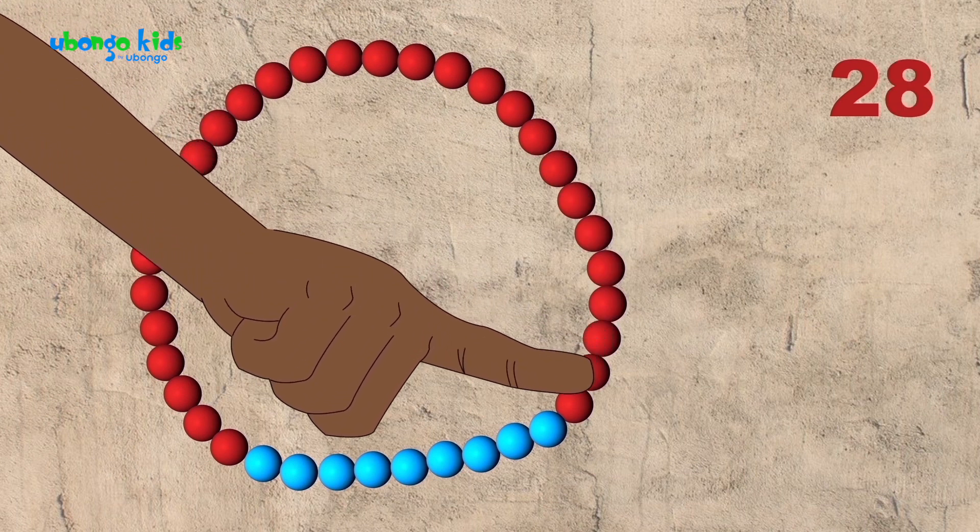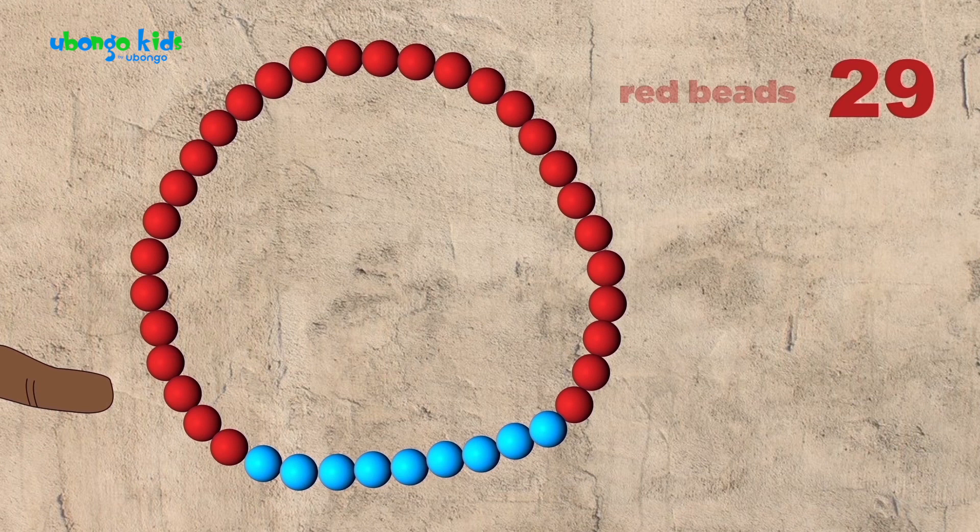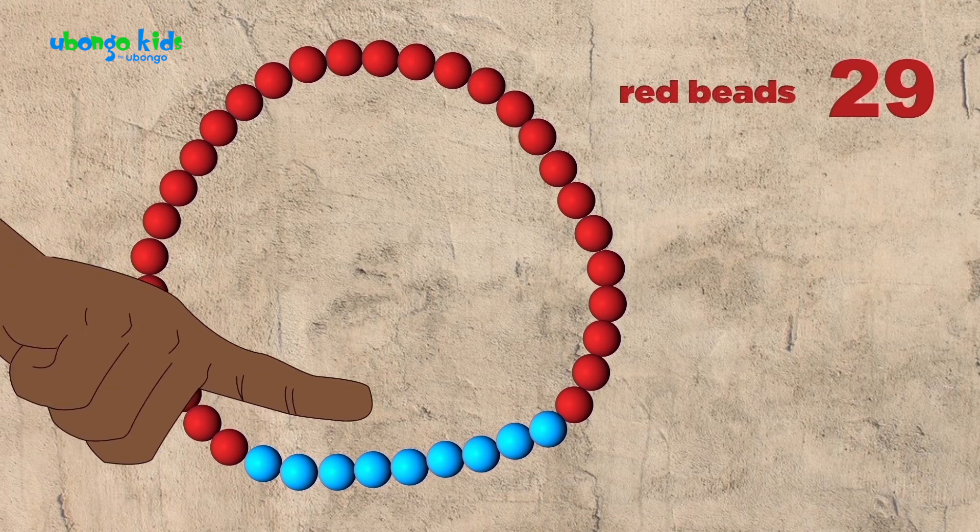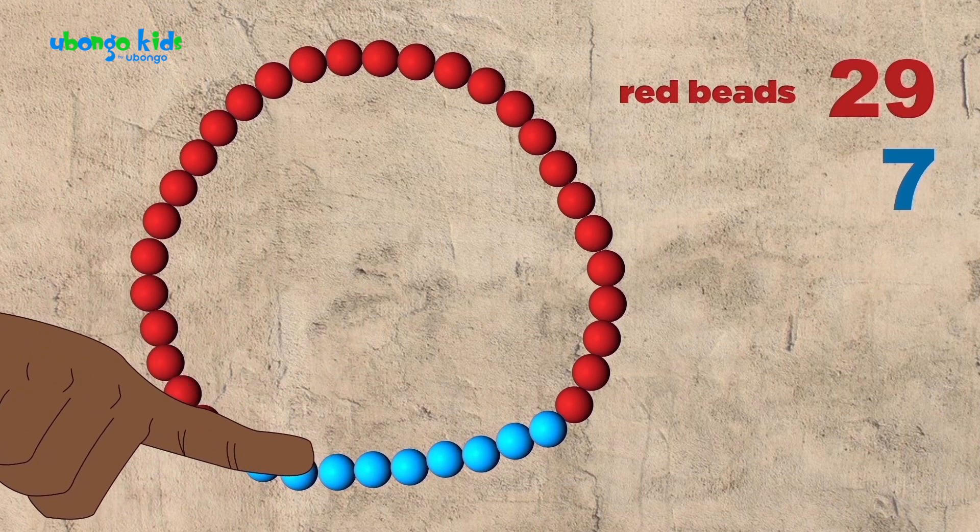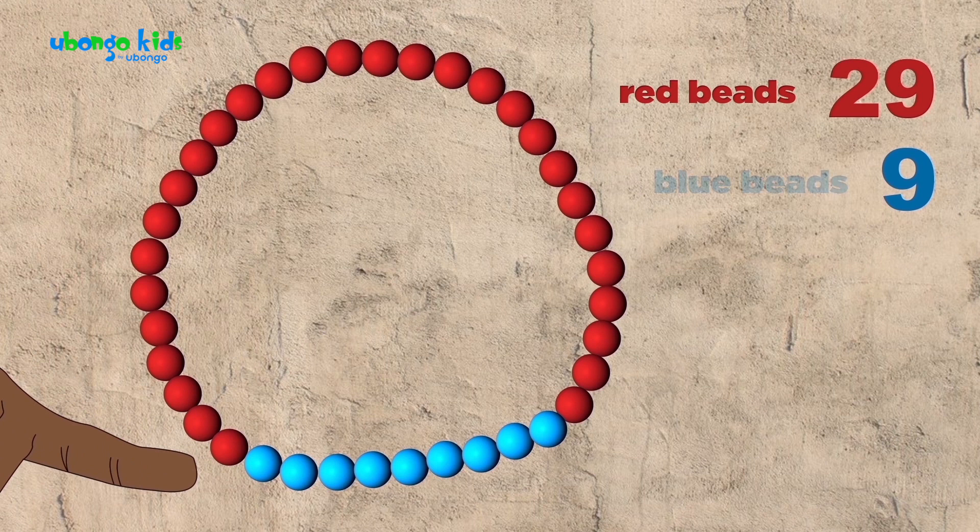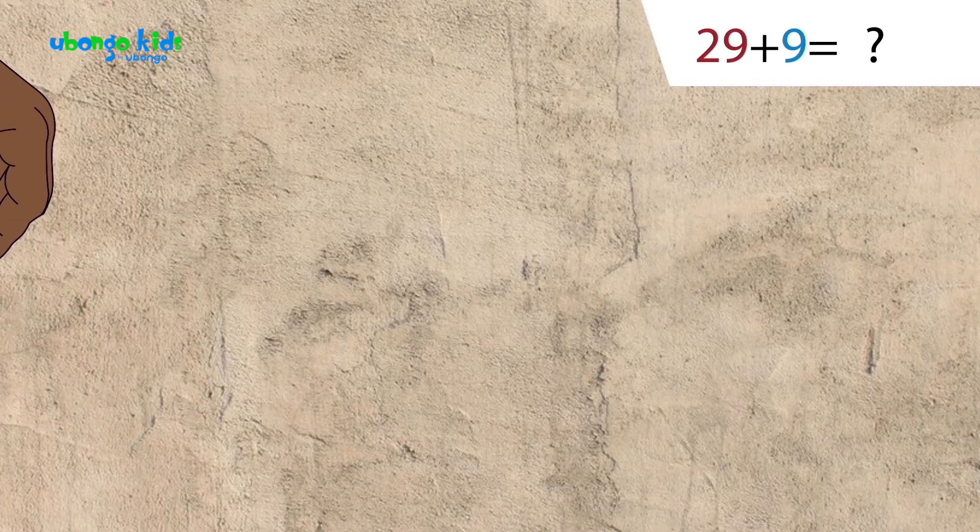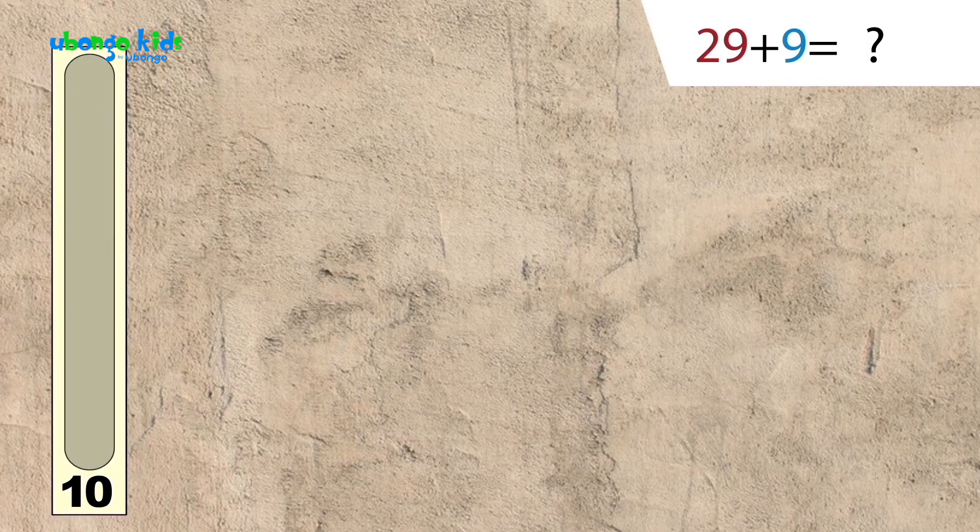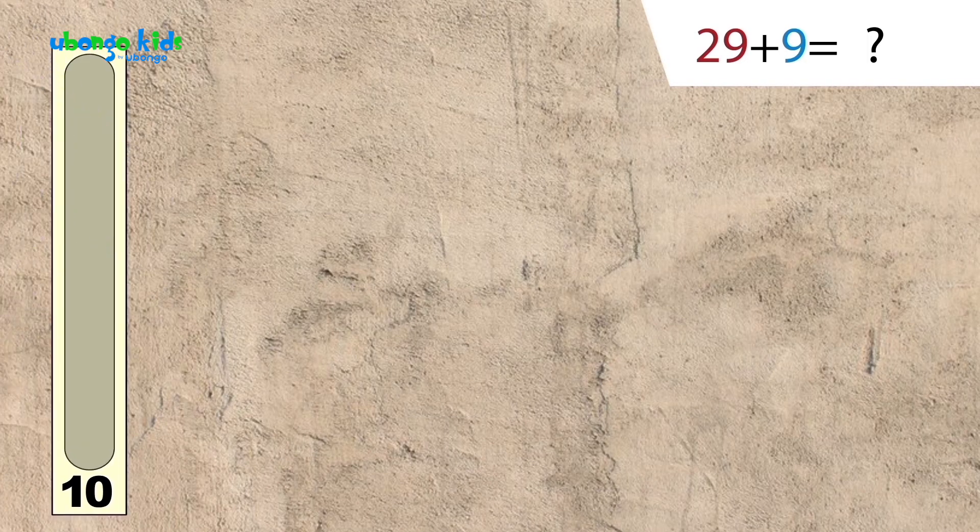This bracelet has twenty-nine red beads and nine blue beads. You see? Look, I've also got these ten boxes that hold ten beads each.